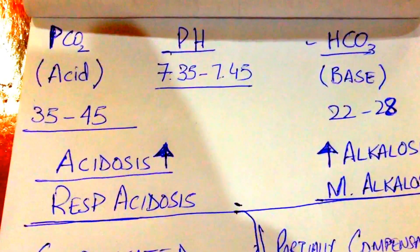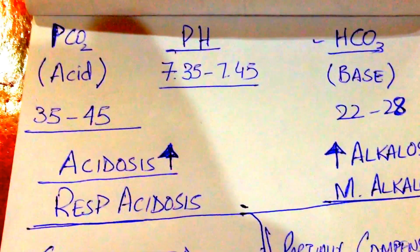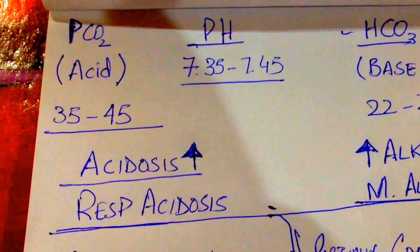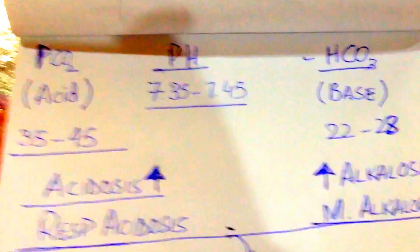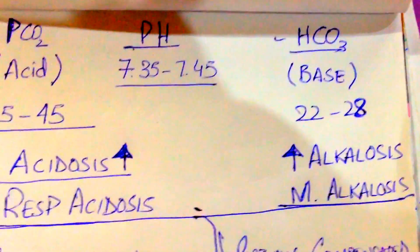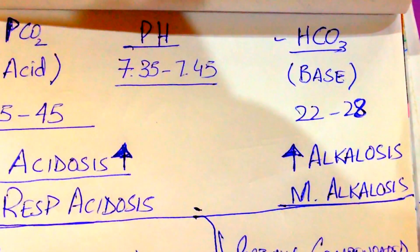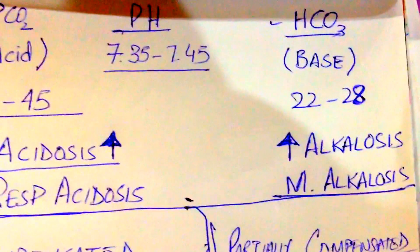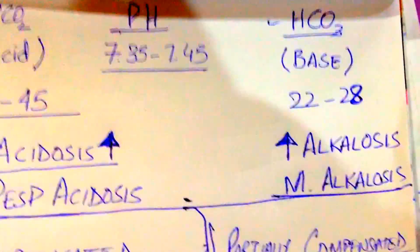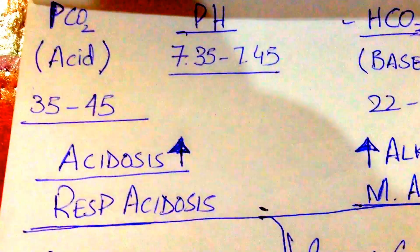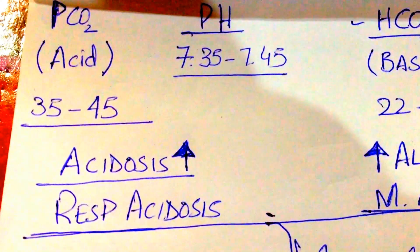CO2 is an acid, so if it is increased, it means acidosis. The normal value of CO2 is 35 to 45. HCO3 is a metabolic component and it is a base. Normal value is 22 to 28. If it is increased, it means alkalosis, specifically metabolic alkalosis. If CO2 is increased, it is respiratory acidosis.